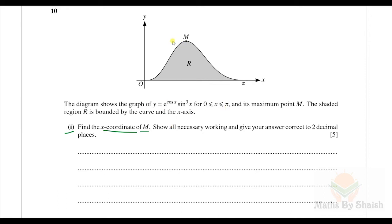At the maximum point M, dy/dx = 0. We differentiate using the product rule and chain rule. The derivative is: e^(cos x) · 3sin²x · cos x + sin³x · e^(cos x) · (−sin x).